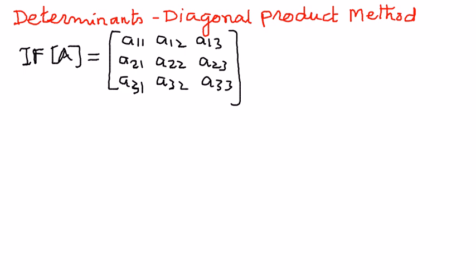So in this diagonal product method, the way we want to do this is as follows. I'm going to write these in different steps. Step number one.